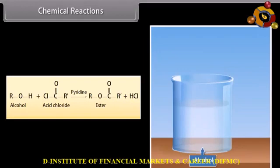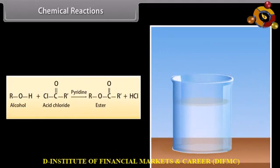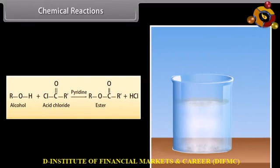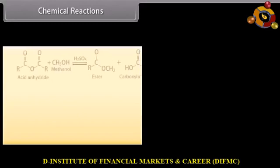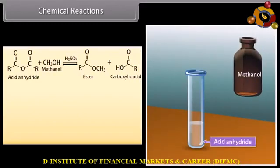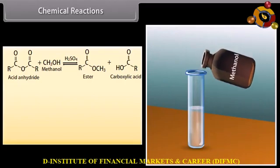Alcohol reacts with acid chloride in the presence of pyridine to form an ester and hydrochloric acid. Methanol reacts with acid anhydride in the presence of sulfuric acid to form an ester and a carboxylic acid.